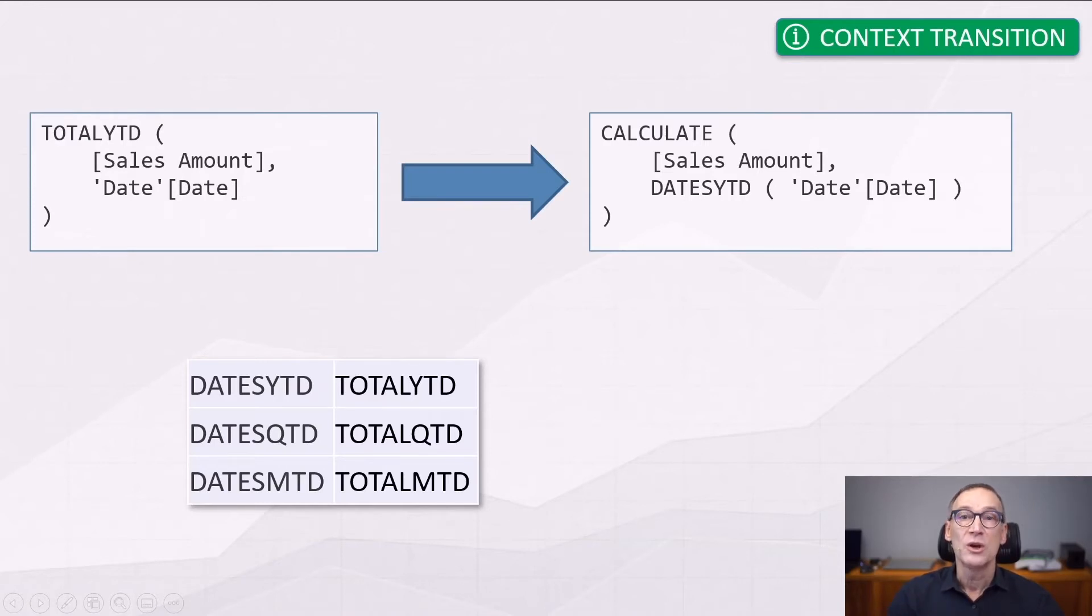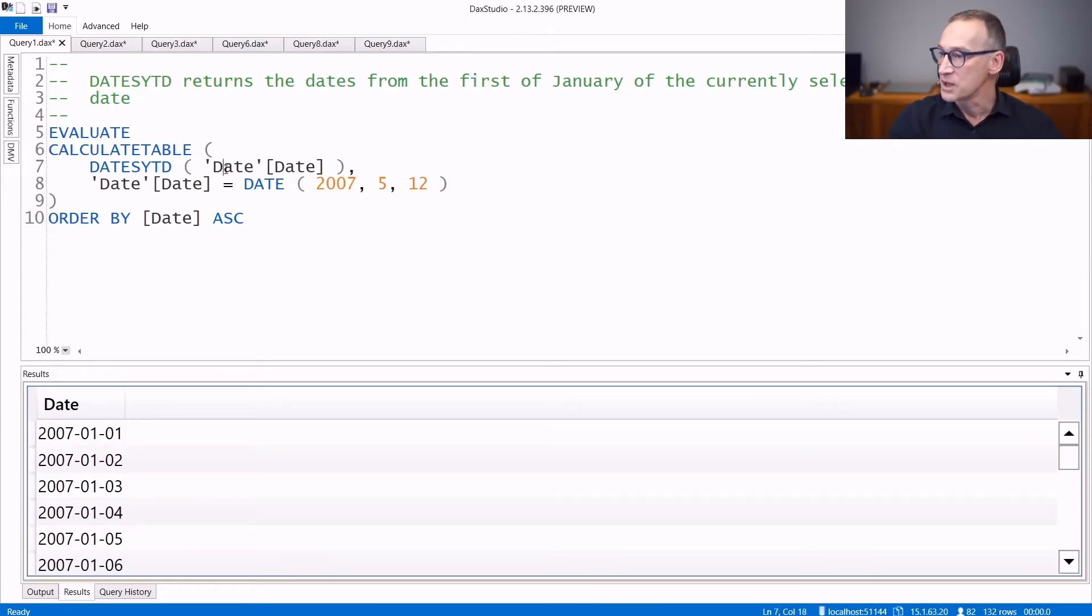And this is why in the description, we only use the DatesYTD, DatesQTD, and DatesMTD functions. The counterpart, the syntax sugar counterpart works the same without the need for CALCULATE. Let's now see some examples of usage.